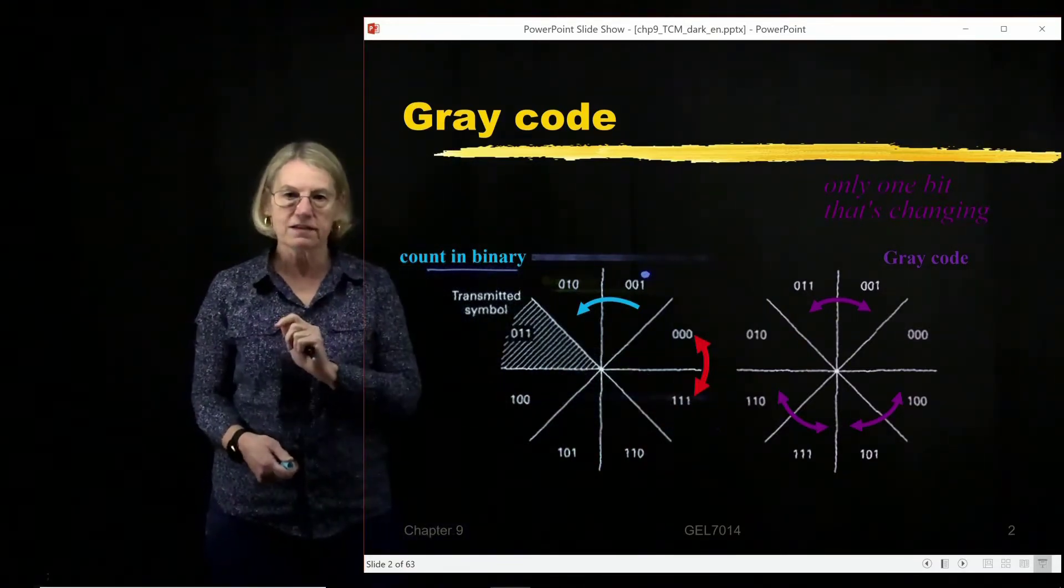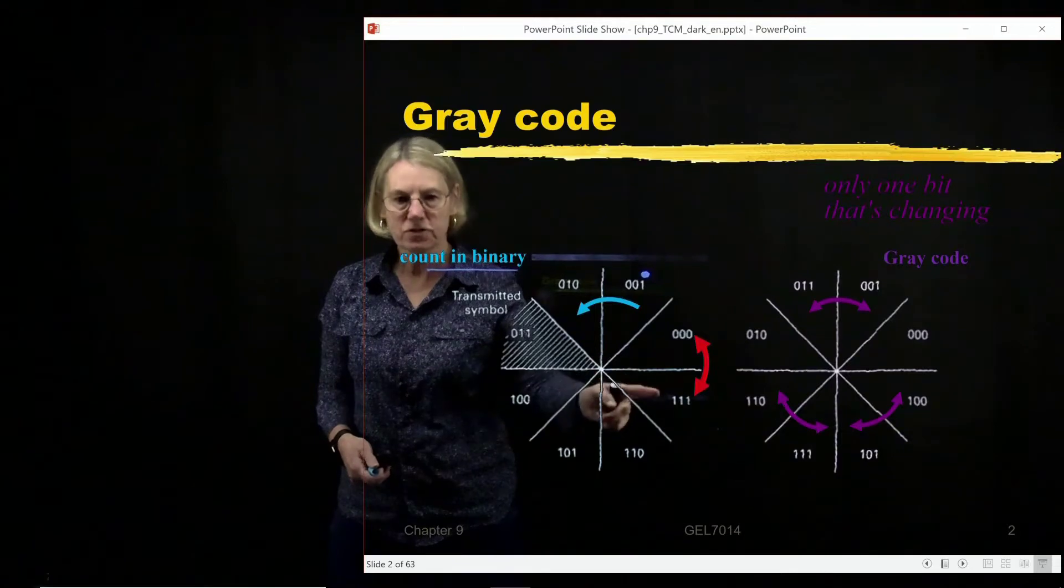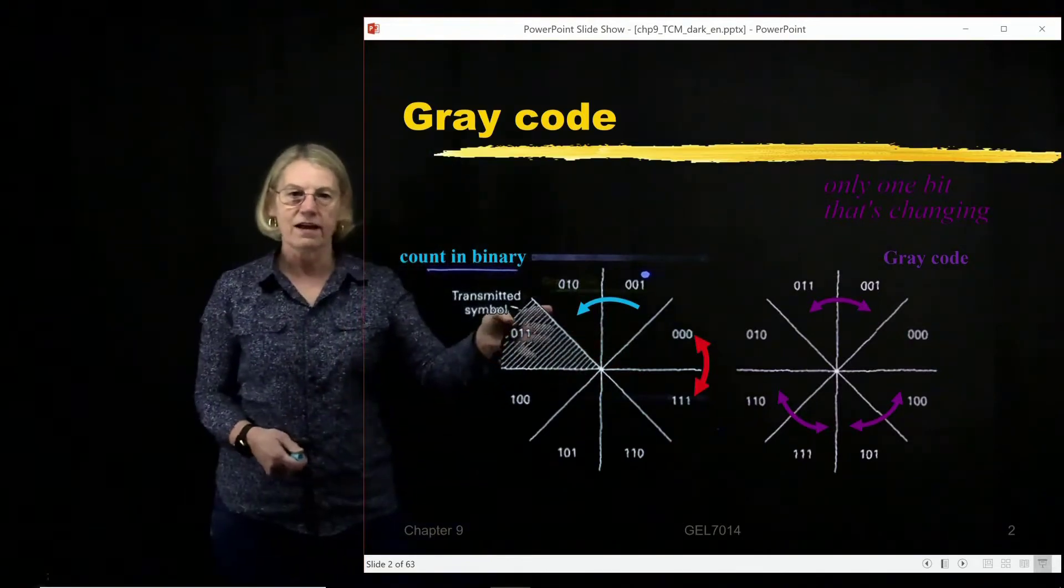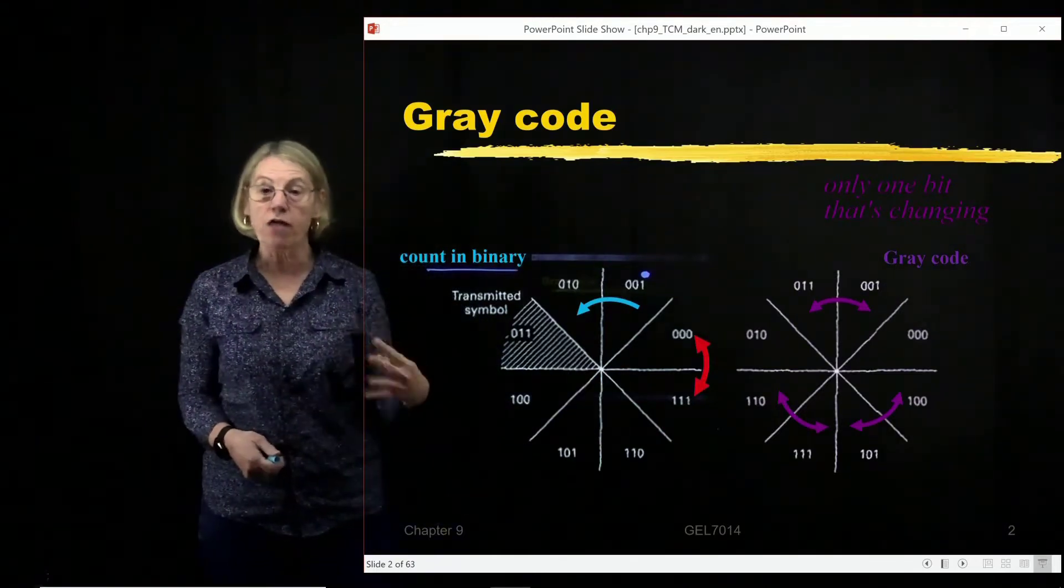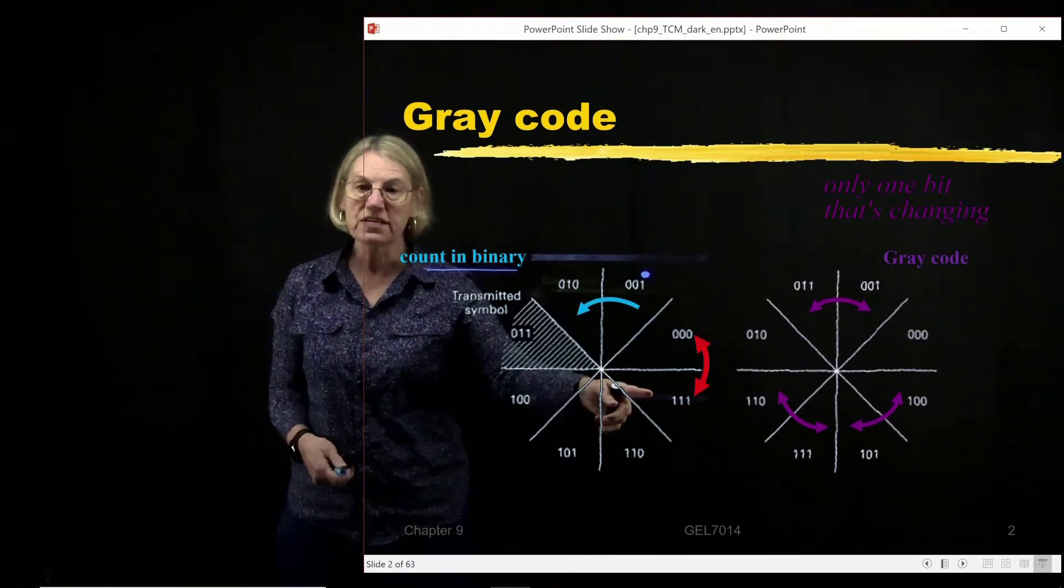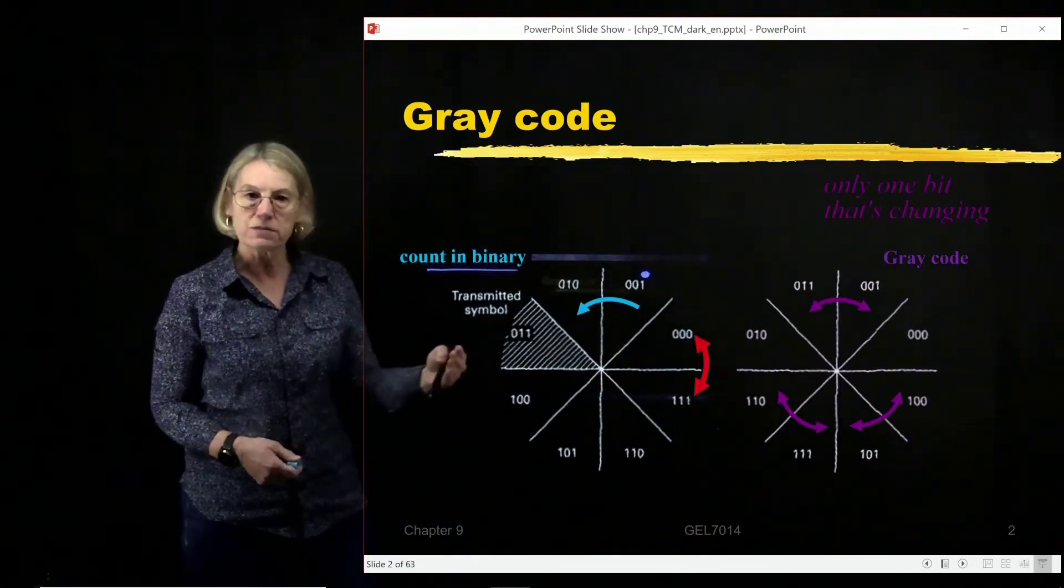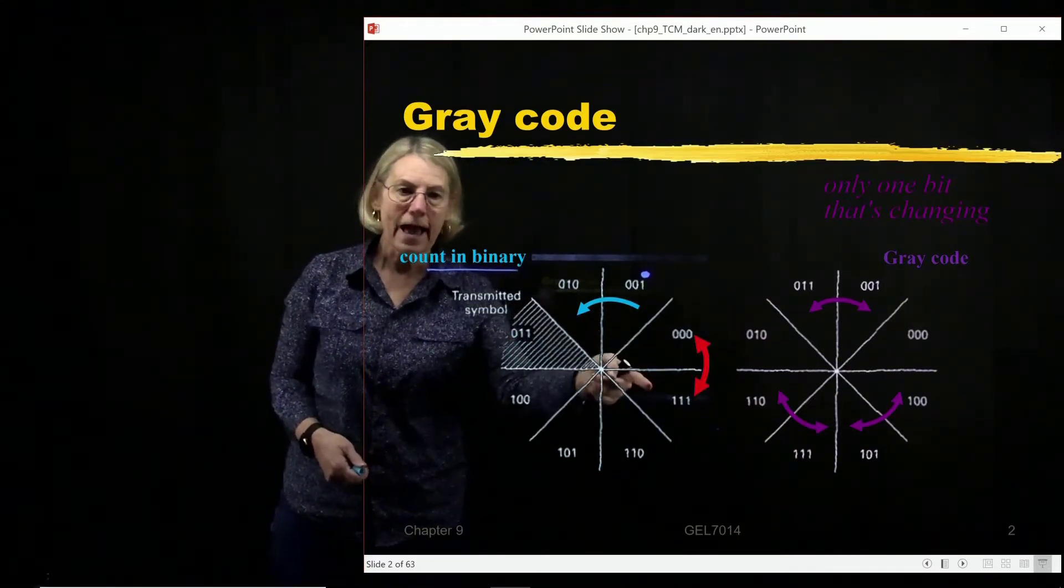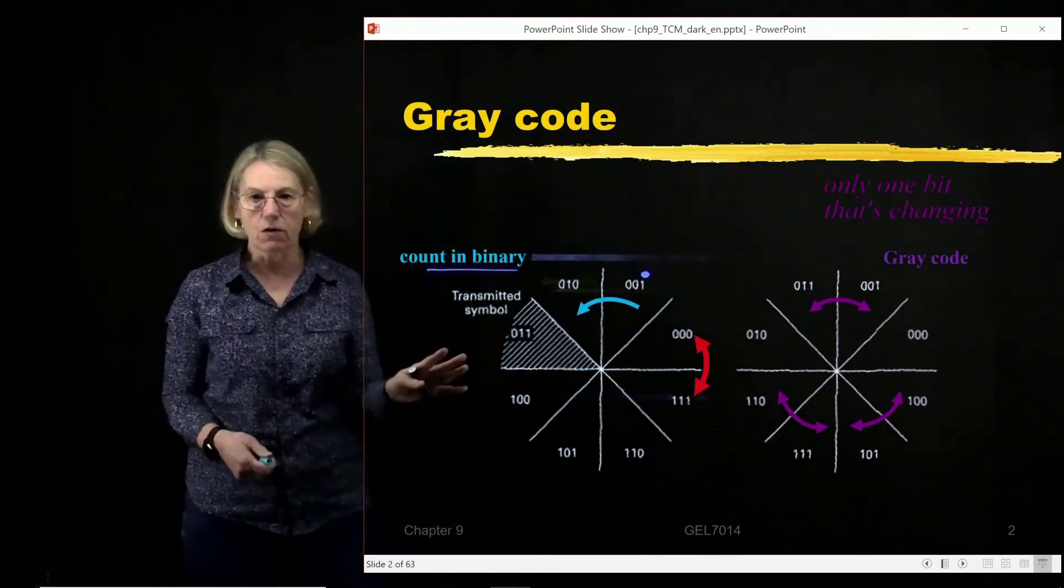But the problem with this was that when we get to neighboring symbols here which have very different changes in the bits. For example, there is a Hamming distance of three between these two sequences. In other words, all three bits change in the assignment from here to here. And the problem with this is, nearest neighbors are where most of the errors occur in a transmission because the noise could tip you over the threshold. Here's the threshold. And if it tips you here, one symbol error will lead to three bit errors which is unacceptable.